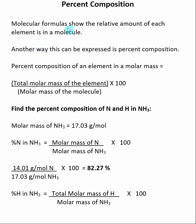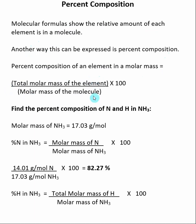Thus far, we've used molecular formulas to show the relative amounts of each element inside of a molecule. Another way that this can be expressed is in percent composition. Percent composition says that of the molecule's total molar mass, how much of that molar mass is due to a particular element. The calculation looks like this, where we take the total molar mass of the element inside of the molecule, divide by the molecule's molar mass, and multiply by 100.